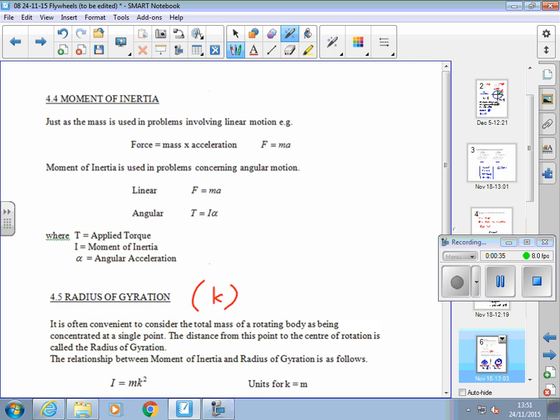In angular motion, there is an equivalent formula. Instead of force, we talk about the torque, which is a turning force. And instead of mass, the linear idea of inertia, we talk about the moment of inertia, I. And instead of linear acceleration, A, we talk about angular acceleration, alpha. So there's an exact equivalent formula relating the force, the moment of inertia, and the angular acceleration for rotating objects.